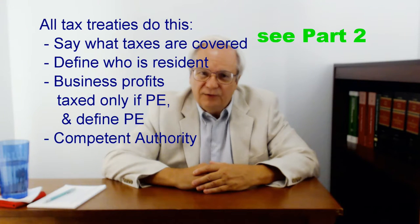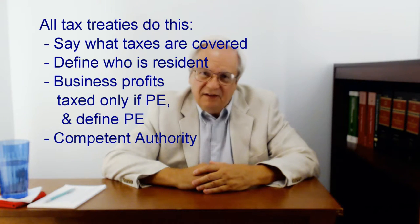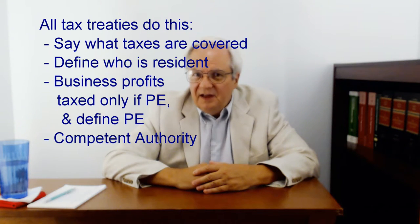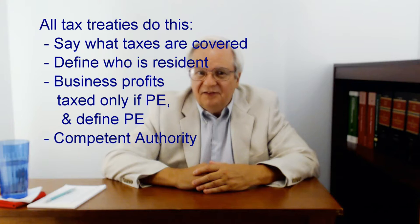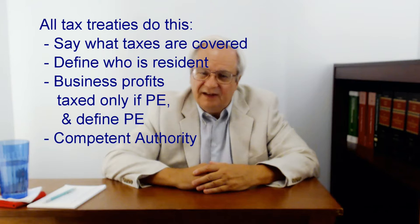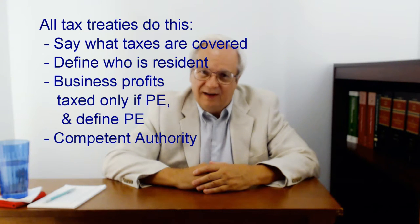The last thing all treaties do is have a sort of procedure for resolving disputes between the countries on tax matters. This is handled by negotiations between specifically designated officials in each country called the competent authority.